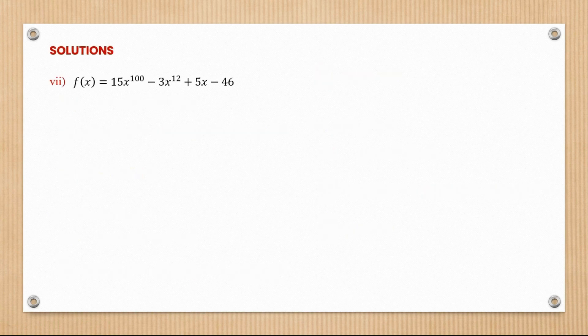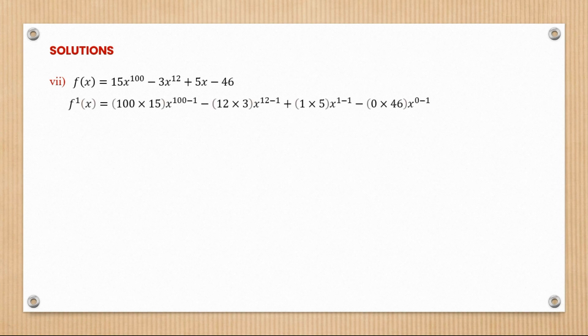For question seven, we have 15x to the power 100 minus 3x to the power 12 plus 5x minus 46. Applying the same process, we get 1500x to the power 99 minus 36x to the power 11 plus 5. The constant 46 differentiates to zero. The concept is the same — just a repetition of the same steps.